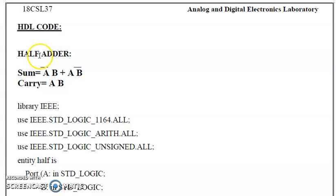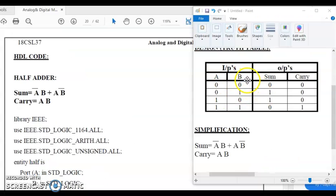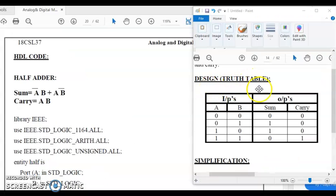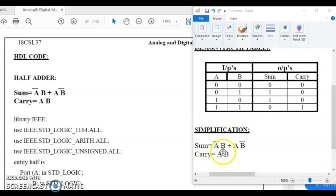First we'll be discussing a half adder. A half adder has two inputs A and B and generates two outputs: sum and carry. The truth table has been written with two inputs A and B, and sum and carry as the two outputs. For the four different combinations of inputs, the corresponding outputs are obtained and simplified to find the expressions for sum and carry. Now we are realizing these expressions with VHDL.